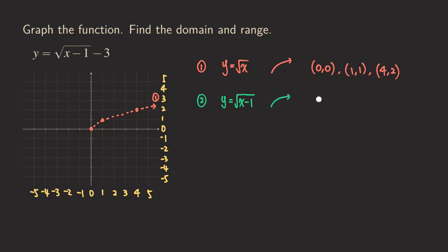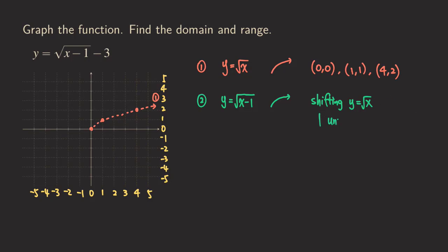It's still going to be this way. We are going to shift everything one unit to the right because of the minus one right here. This minus one is shifting y equals square root of x one unit to the right. The y values are not affected, so we just move each point one unit to the right. And so now we have a new function — that is the second one.